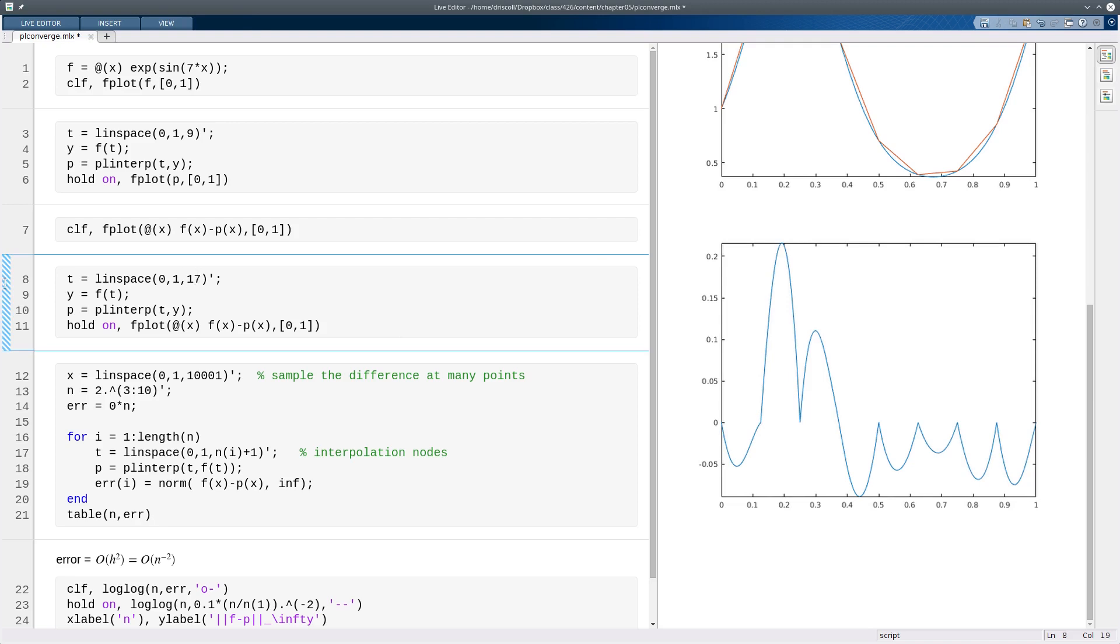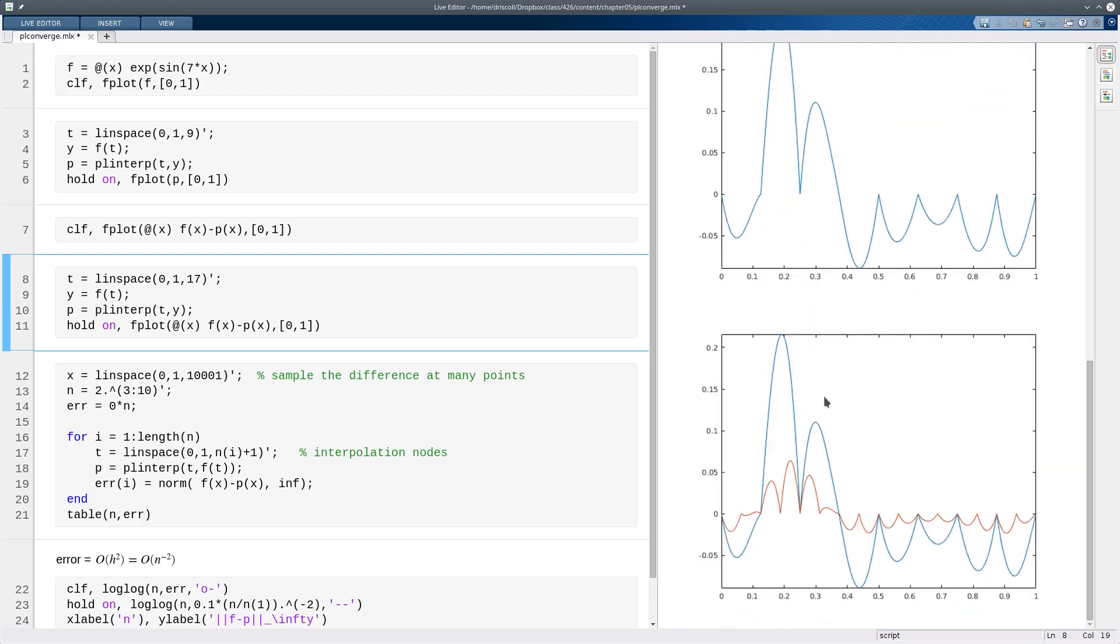So now if I were to increase n and repeat the interpolation process, so now n goes to 16, then you can see that the error gets smaller. In fact, since I doubled n by going from n equals 8 to n equals 16, second-order convergence says that this error should decrease by about a factor of 4, which seems to be what's going on.